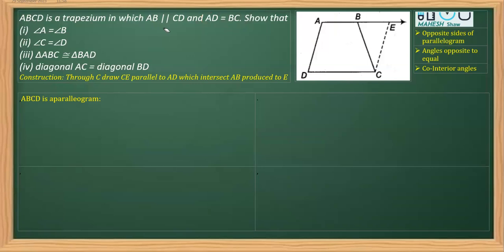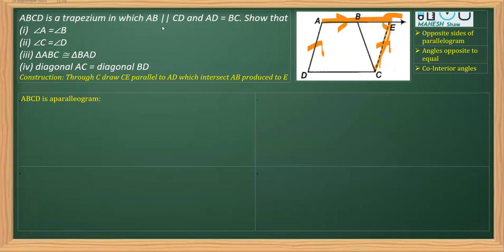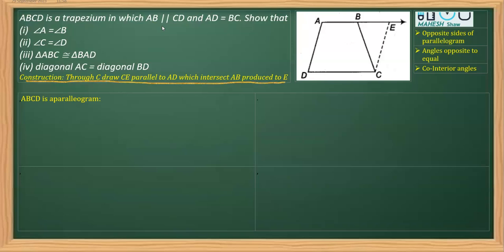Now reading further, the first part asks us to prove that angle A is equal to angle B. To do this, we begin with a construction: through C, draw a line CE parallel to AD, meeting AB produced at point E. That is what we need to draw, and also write in the construction part.